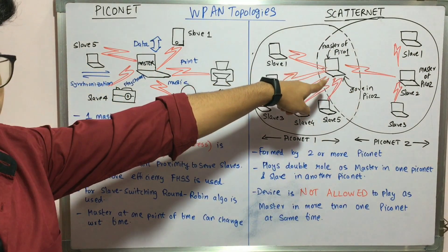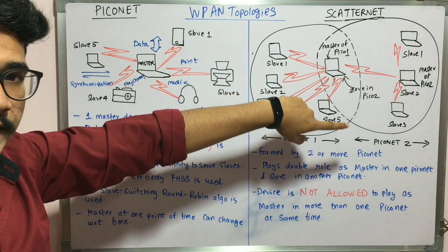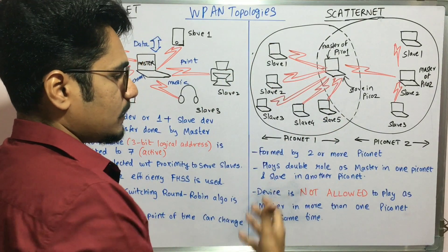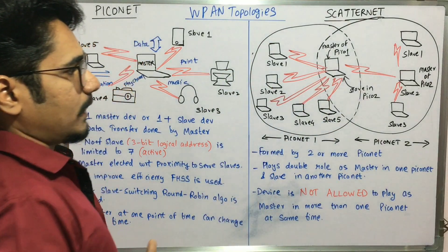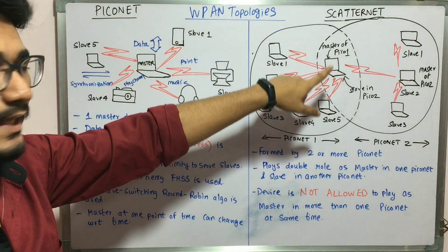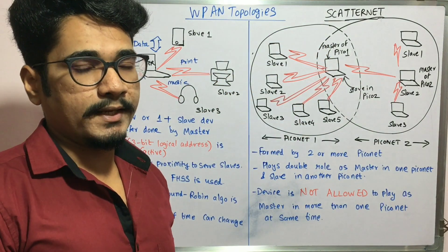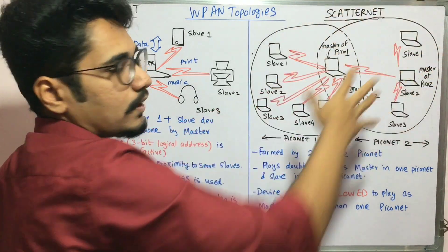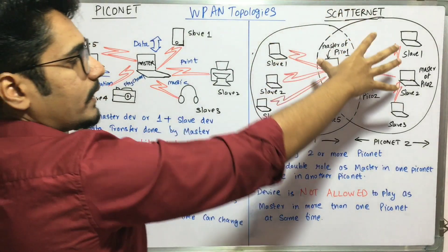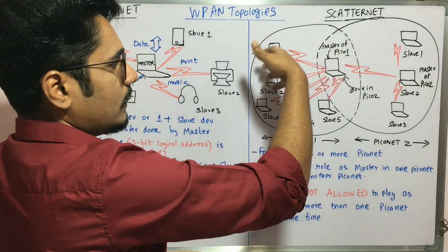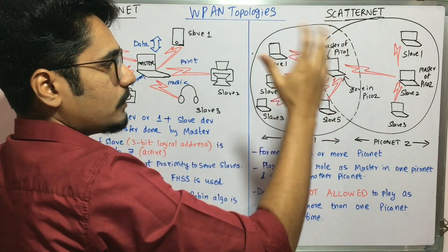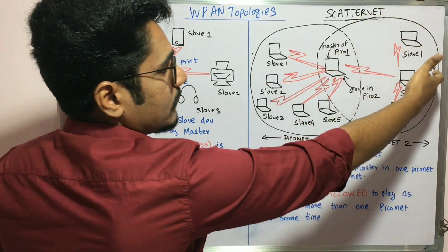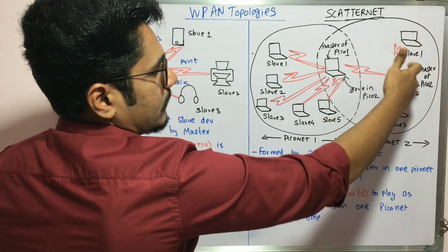In a Scatternet, a device can act as both master as well as slave. However, the device is not allowed to play the role of master in more than one Piconet at the same time. It can play the role of master in one Piconet and slave in another, but it cannot be master in both Piconets simultaneously. So this device can serve as master in one Piconet, while being a slave connected to the master of the other Piconet.